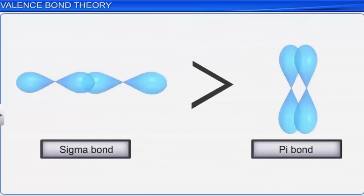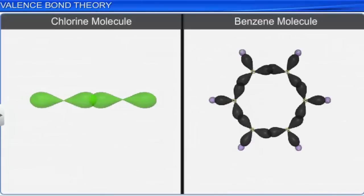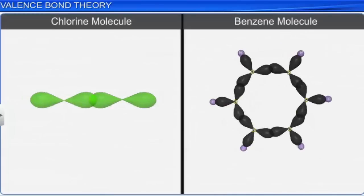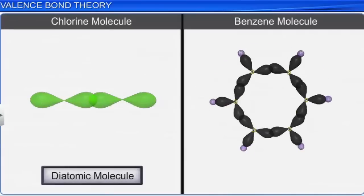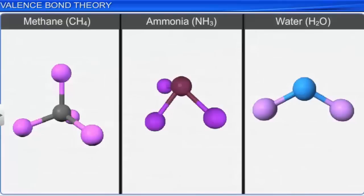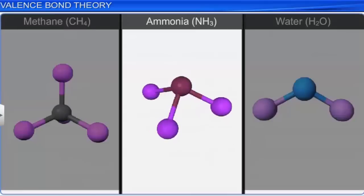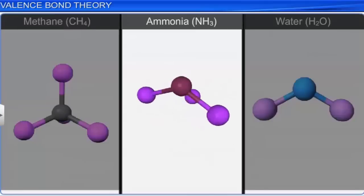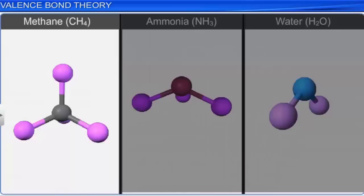The overlap criterion of orbitals applies equally to both diatomic and polyatomic molecules. However, the valence bond theory fails to determine the actual shapes of polyatomic molecules such as methane (tetrahedral), ammonia (pyramidal), and water (bent). This is because the pure atomic orbital model does not account for the observed bond geometries.